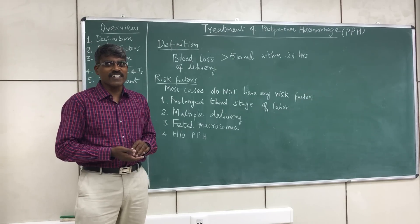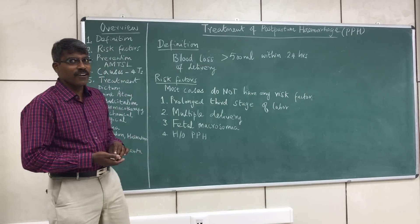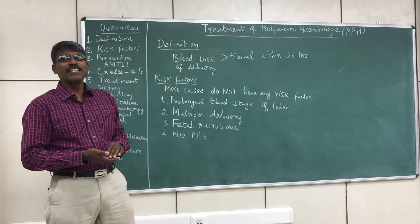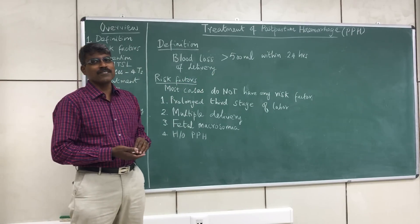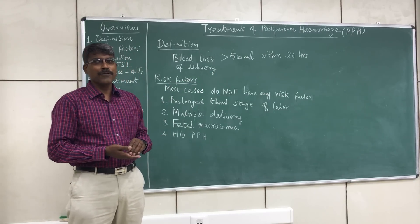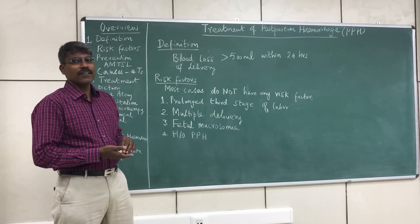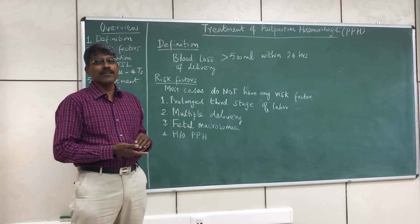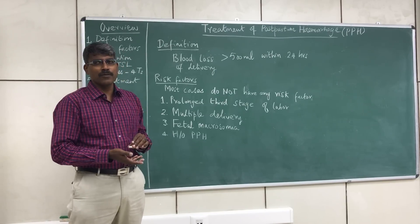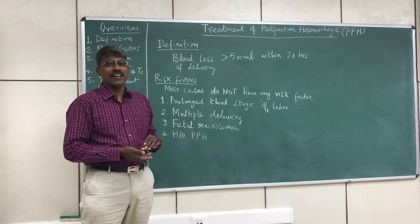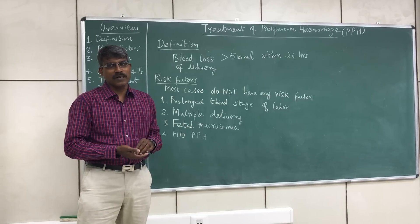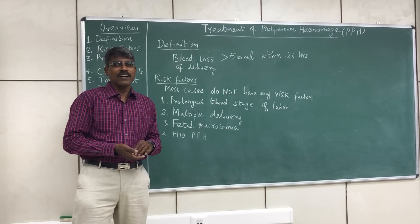Postpartum hemorrhage is defined as blood loss of more than 500 ml within 24 hours of delivery. If the blood loss happens after 24 hours up to 6 weeks, it is called late postpartum hemorrhage, or secondary postpartum hemorrhage.